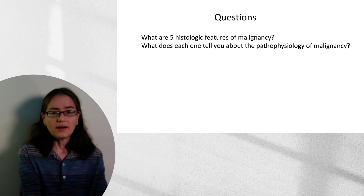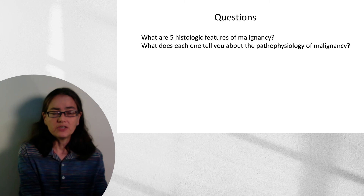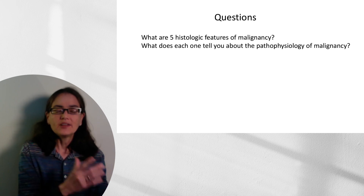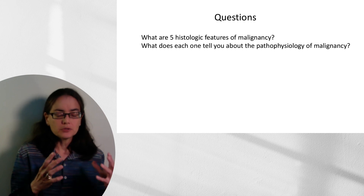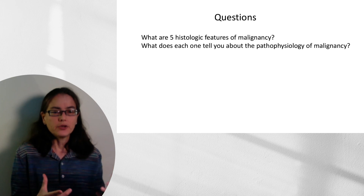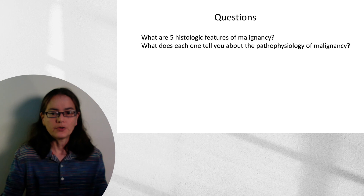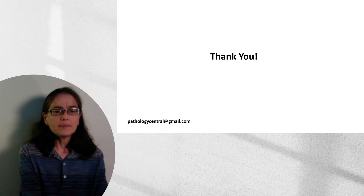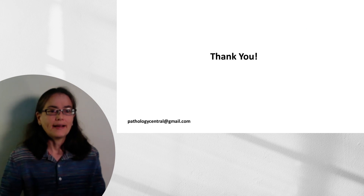I'd like to finish with some questions so you can hit pause and reflect. What are five histologic features of malignancy, and what does each one tell you about the pathophysiology of malignancy? What is each feature telling you about those cells? By recognizing this, if you can't remember whether something is a sign of malignancy, think back to what it's telling you — with this understanding, you can get there on your own without memorizing. Thank you very much. Please send an email to pathologycentral@gmail.com to let me know which other entities you'd like covered, and please don't forget to subscribe.